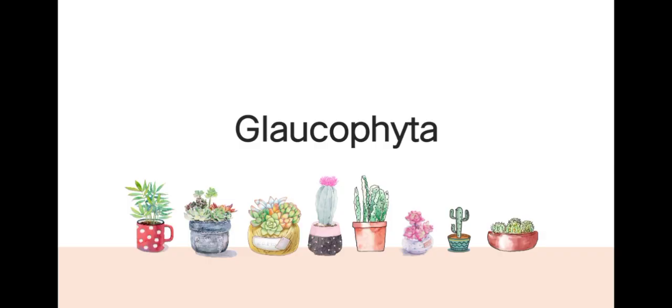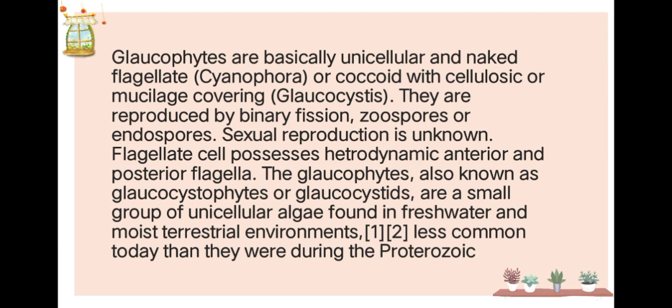Glaucophyta or glaucophytes are basically unicellular and naked flagellates — the sinophora — or coccoid with cellulosic or mucilage covering. They are reproduced by binary fission, zoospores, or n-spores. Sexual reproduction is known; flagellate cells possess heterodynamic anterior and posterior flagella. Glaucophytes are a small group of unicellular algae found in freshwaters and moist terrestrial environments, and were more common during the Proterozoic.